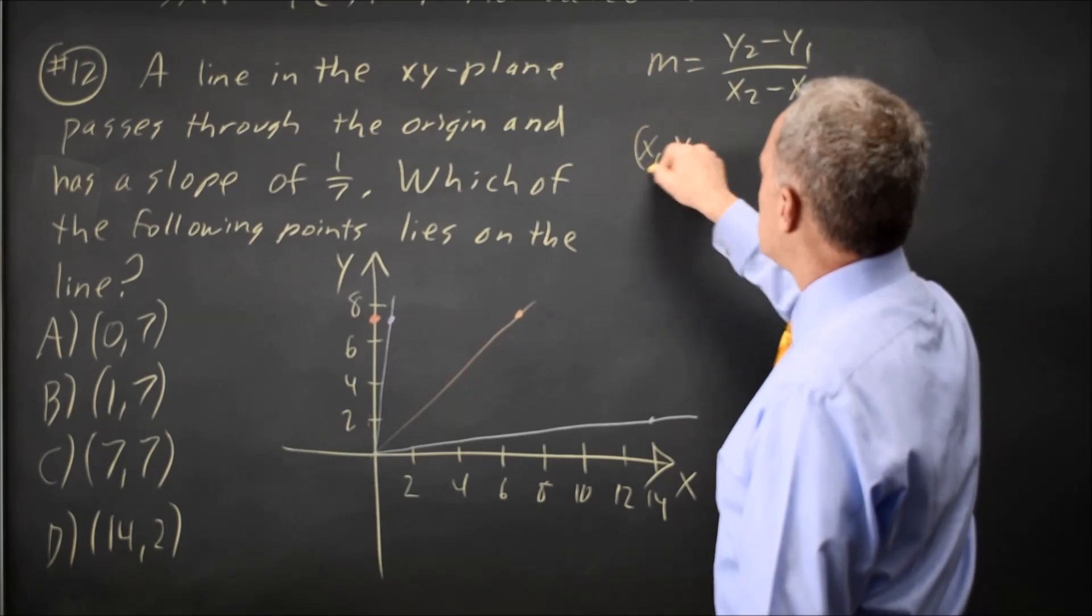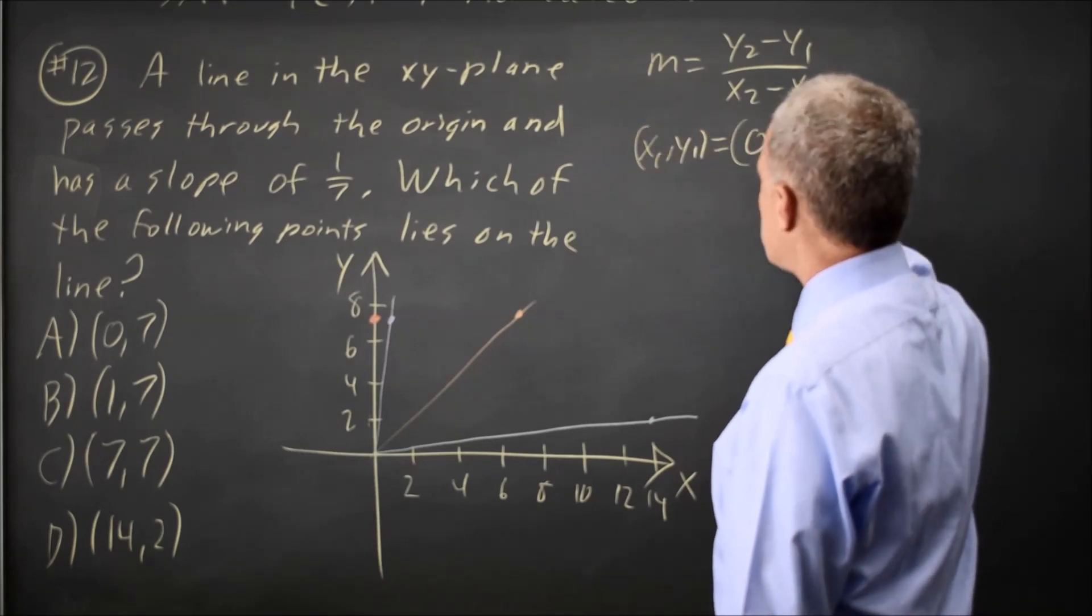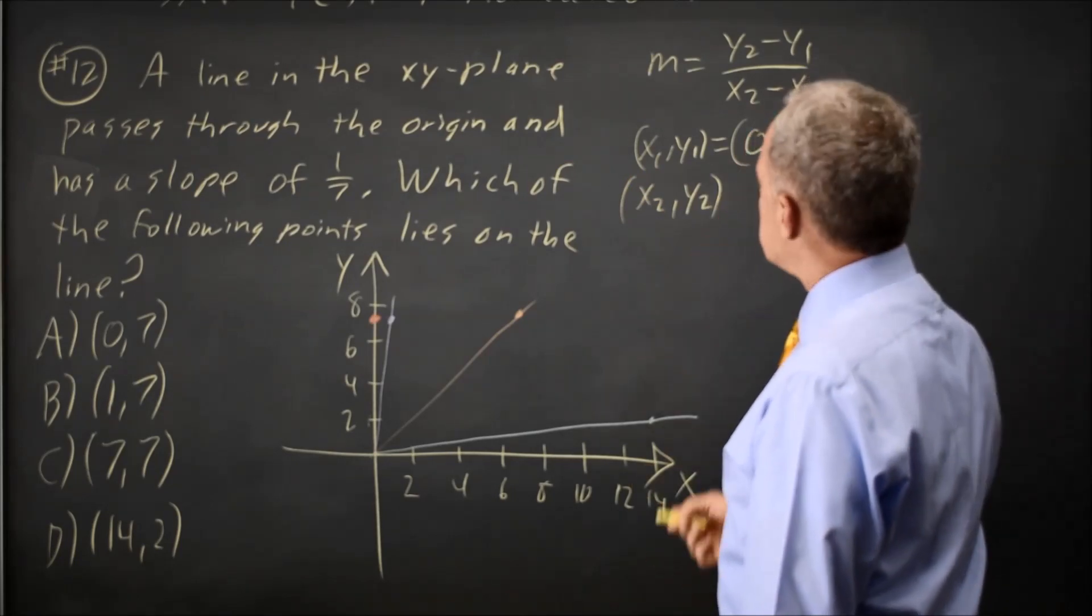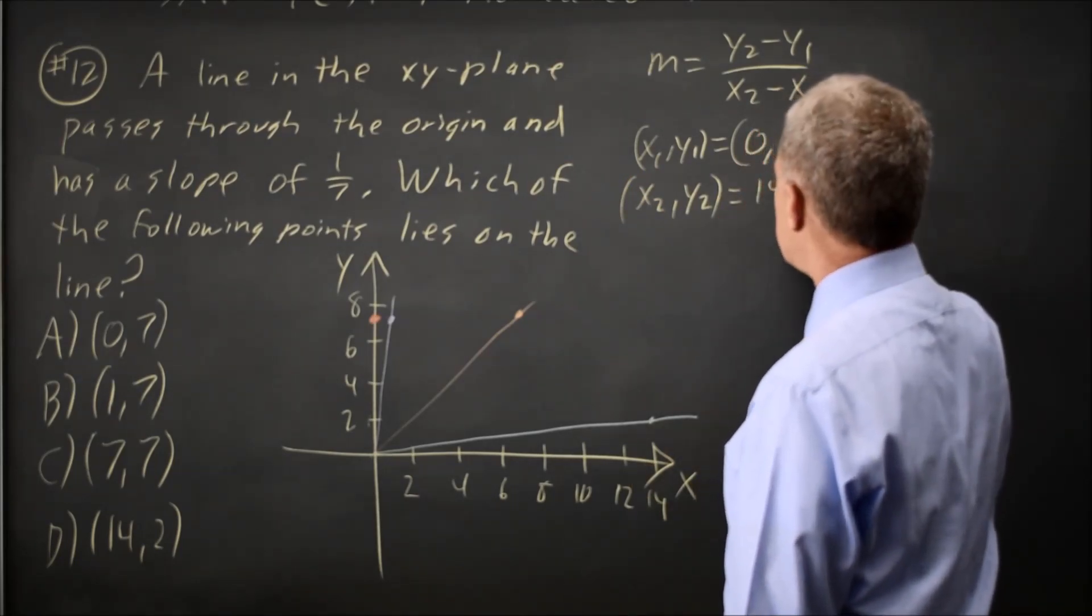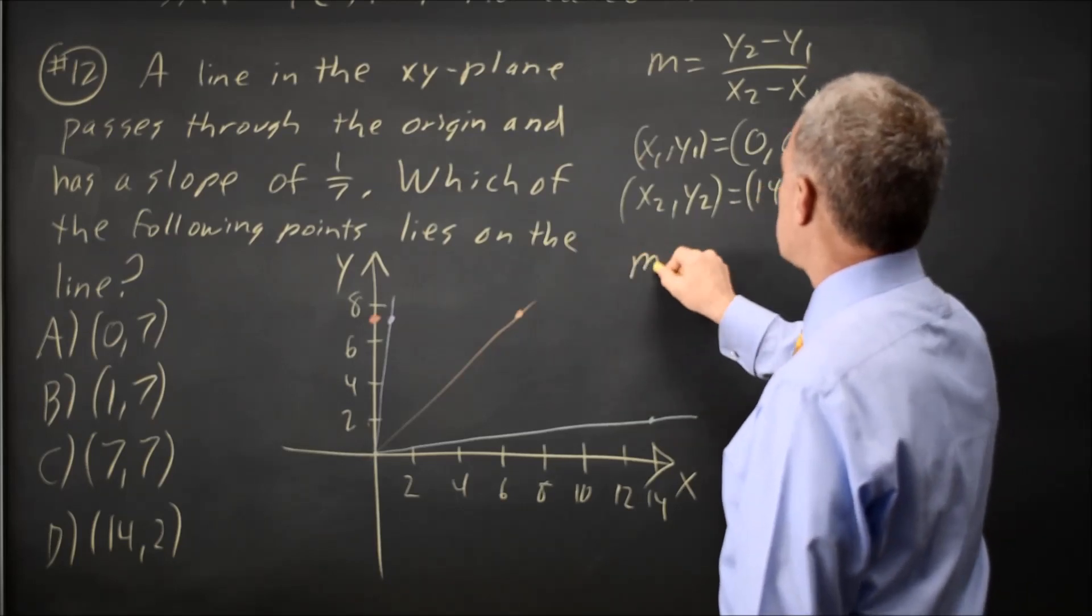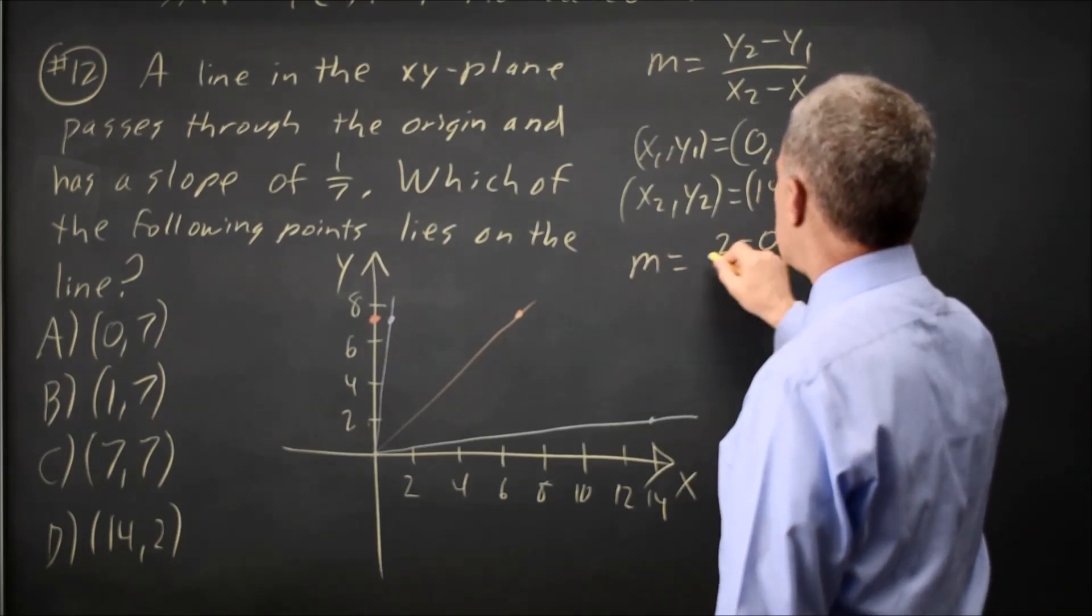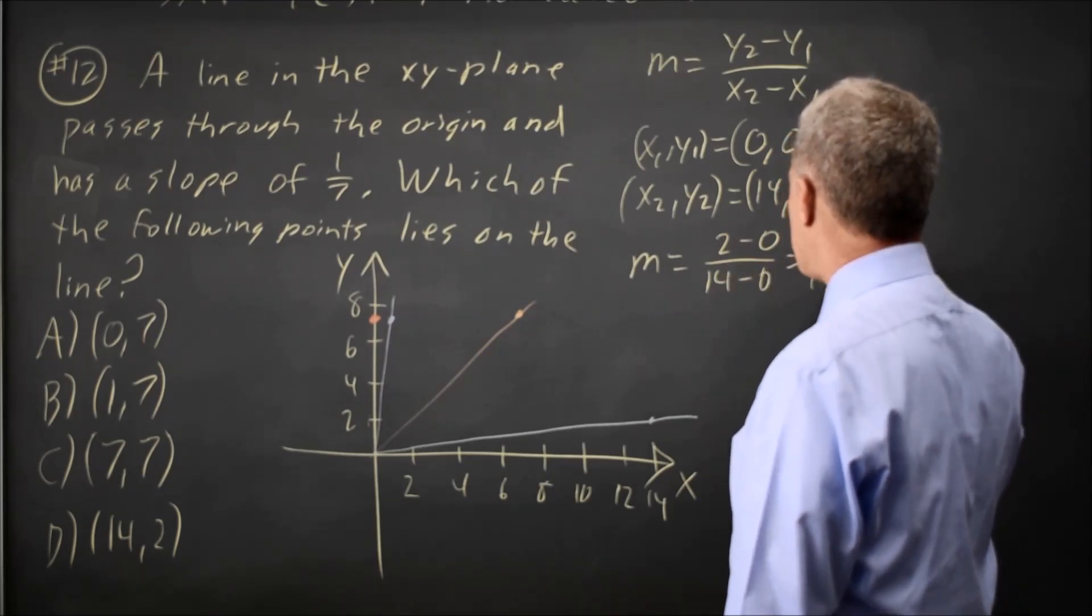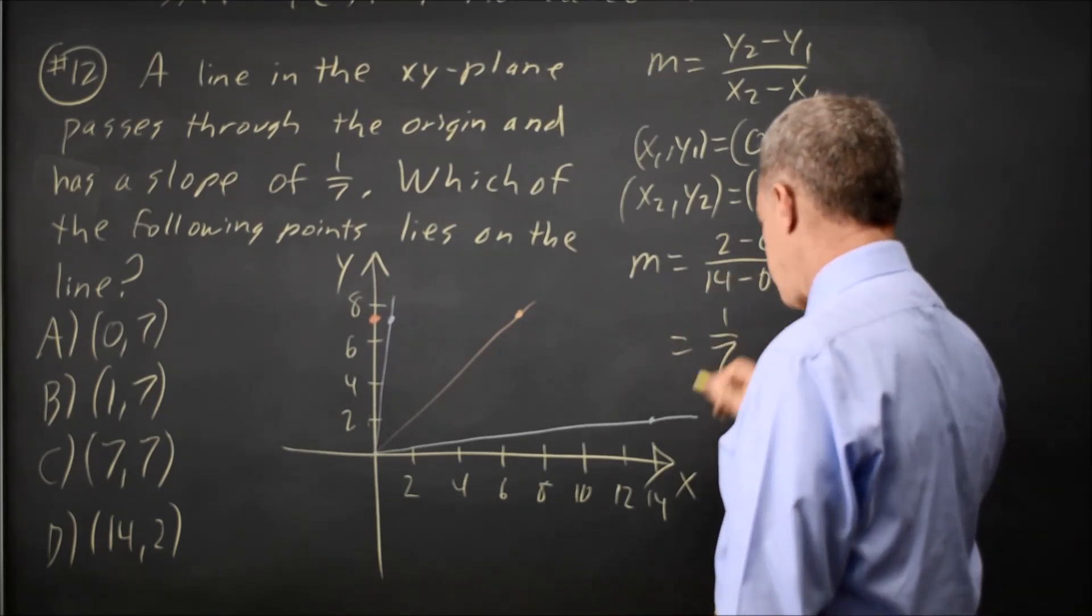x1, y1 is the point 0, 0, the origin, and x2, y2, if choice D is correct, would be 14, 2. So y2 minus y1 is 2 minus 0, x2 minus x1 is 14 minus 0, and that is 2 over 14, which is 1 over 7.